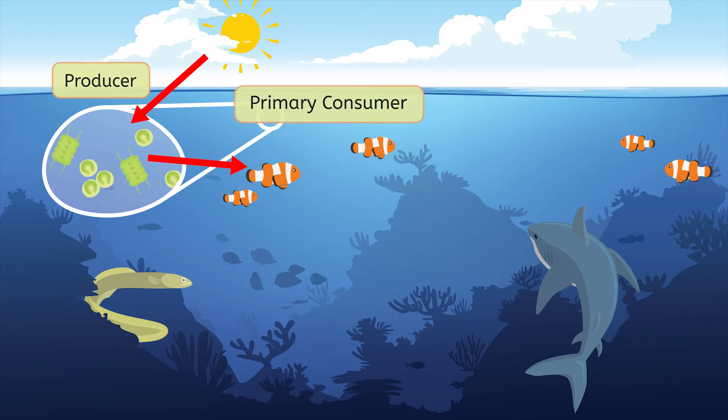Larger fish, such as the eel, then eat the clownfish. Let's add an arrow showing that transfer of energy. What type of consumer does that make the eel? Right, the eel is a secondary consumer because it eats the clownfish, a primary consumer.